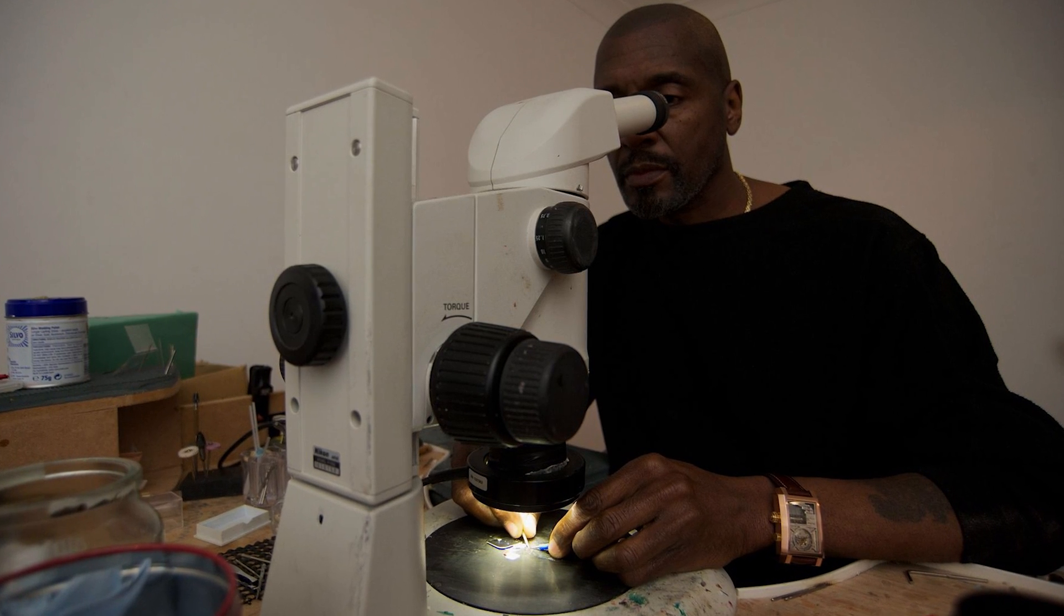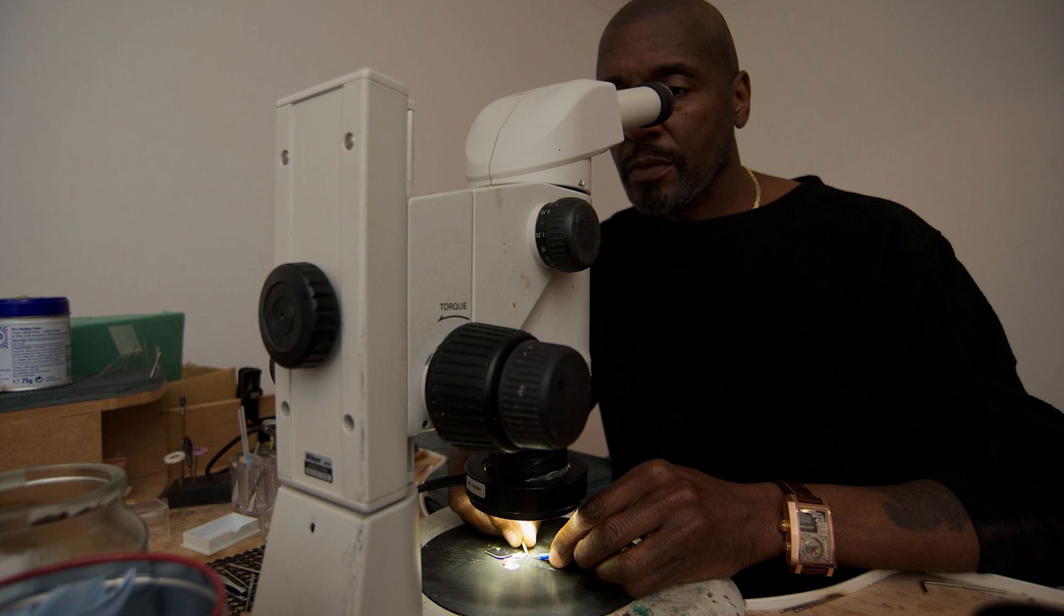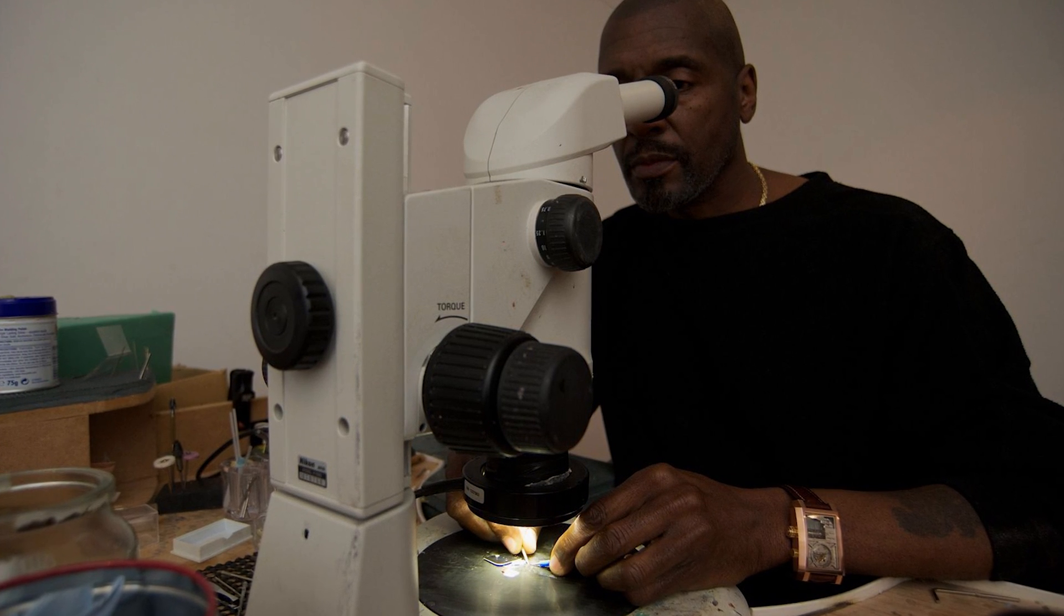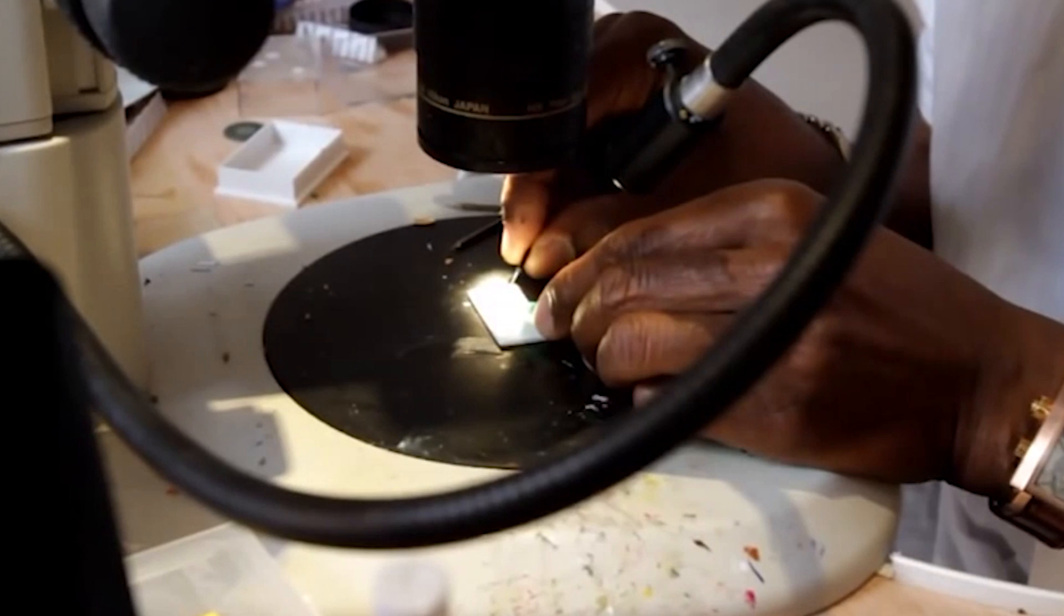To make these tiny sculptures, Willard uses a 600 times magnification microscope and enters an almost meditative state, slowing his heartbeat and then doing the particular action between the heartbeats to keep his hand as steady as possible.